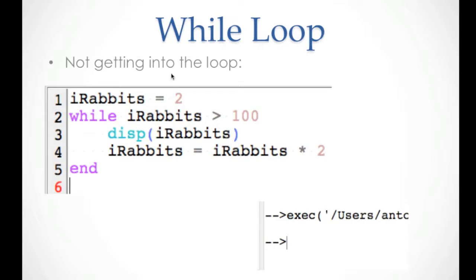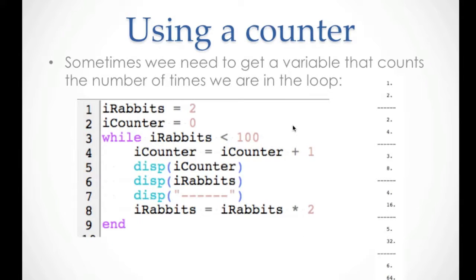Another problem is not getting into the loop at all. If we define irabbits as two but say while irabbits is bigger than 100, it won't execute because two is not bigger than 100. So we never display or do anything — the condition is totally wrong and we don't get into the loop. In the execution, you won't see anything.